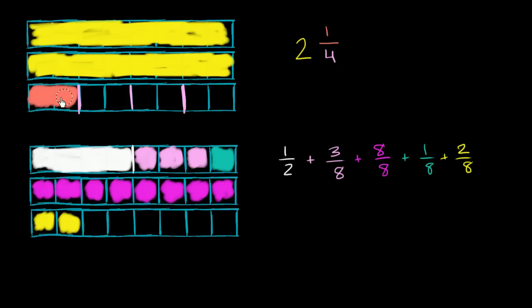If you took this 1/4 and split it into two, so you have two times as many pieces, it becomes 2/8. If 1 times 2 is 2, 4 times 2 is 8. So that 1/4 is the same thing as 2/8. You see, the 8/8 is the same thing as a whole. And you can make another whole out of 1/2 plus 3/8 plus 1/8, and they add up to a whole. This 1/2 is the same thing as 4/8. Then you have 3/8 and then you have 1/8. If you add all of these together, 4/8 plus 3/8 plus 1/8, you are going to get 8/8, which is this entire whole.